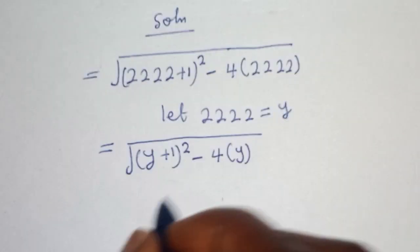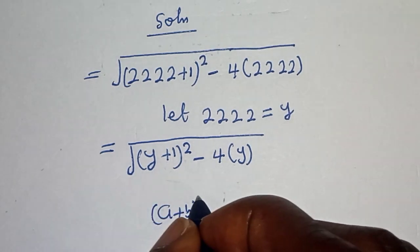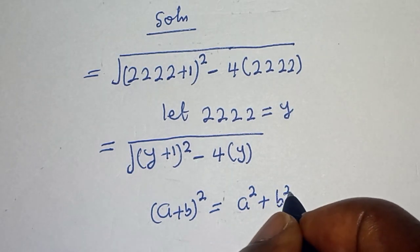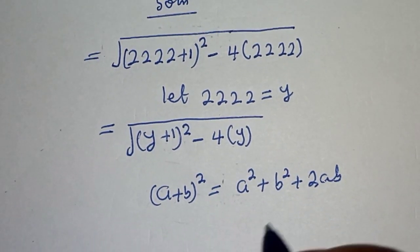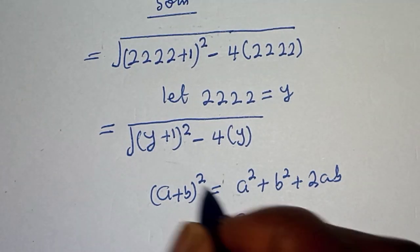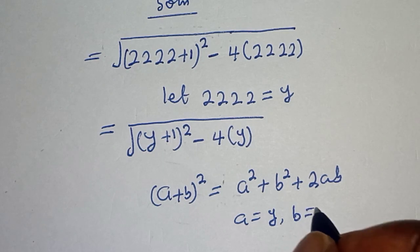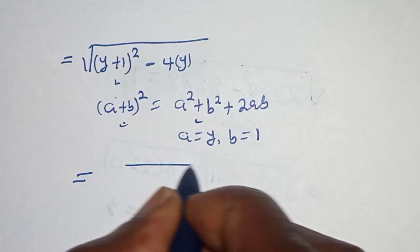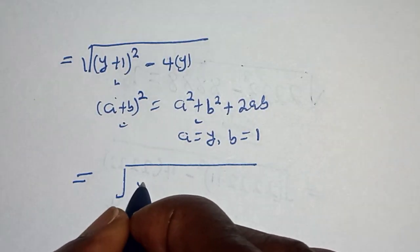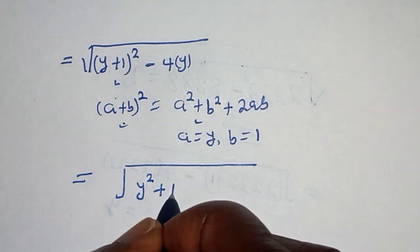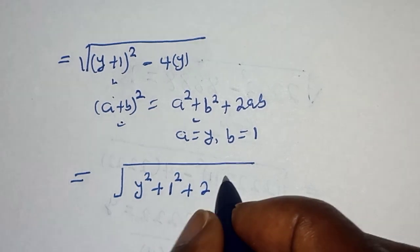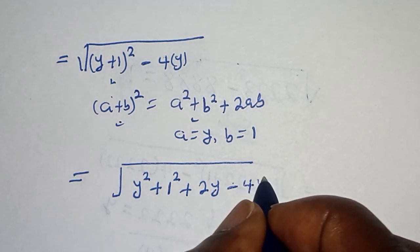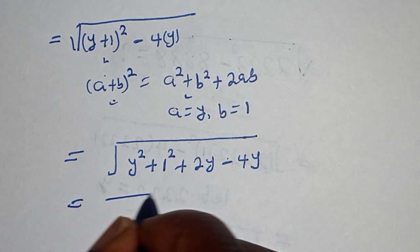Take note that if you have a plus b squared, this is equal to a squared plus b squared plus 2ab. In this case, a is equal to y and b is equal to 1. Then if you replace, we have square root of y squared plus 1 squared plus 2y minus 4y.